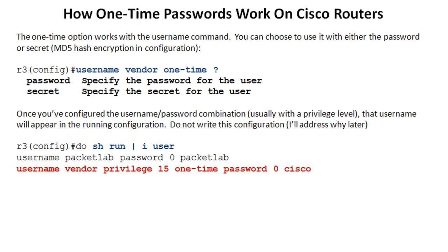So how do these one-time passwords work? It's just an option added into the username configuration. You create your username — in this case we're using 'vendor' — then you type in 'one-time' (with a hyphen). If you invoke Cisco IOS help with the question mark, you have a couple of options: password and secret. Password is unencrypted; secret is a password with MD5 encryption. Once you've configured the credentials with a username and password combination, you usually want to add a privilege level. The username will appear in the running configuration. If you do a 'show run | include user', you can see on R3 we have a preexisting username 'packet lab', and our new 'vendor' account with privilege level 15 and a one-time password of Cisco.